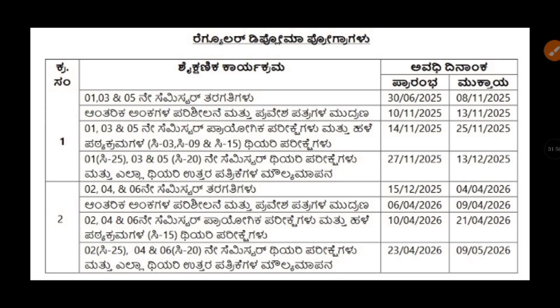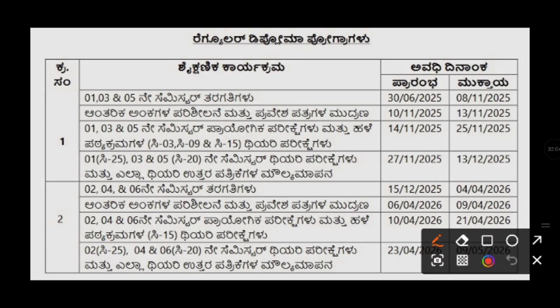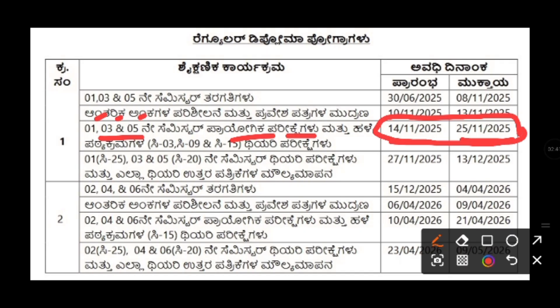For C20 and C25 syllabus candidates, the lab exam comes first, then the theory exam. The lab exam for first, third, and fifth semester students — including new 2025 admissions — will be from 14/11/2025 to 25/11/2025. The lab exam timetable will be shared by your department only; it will not be common for all.